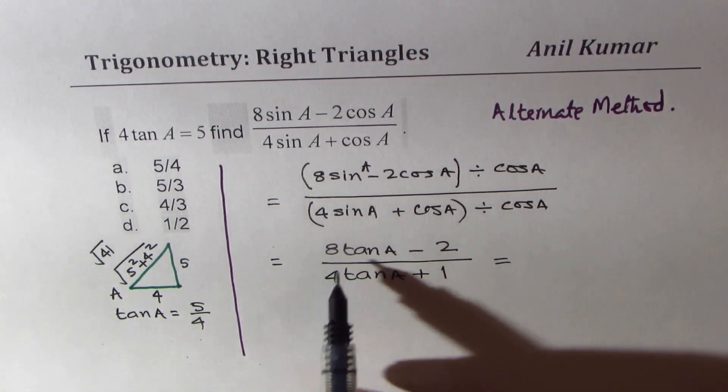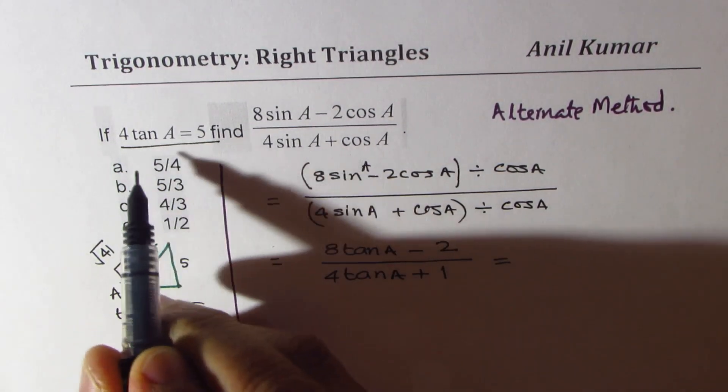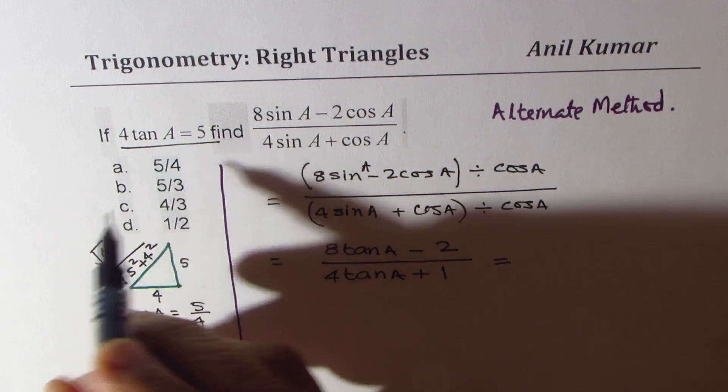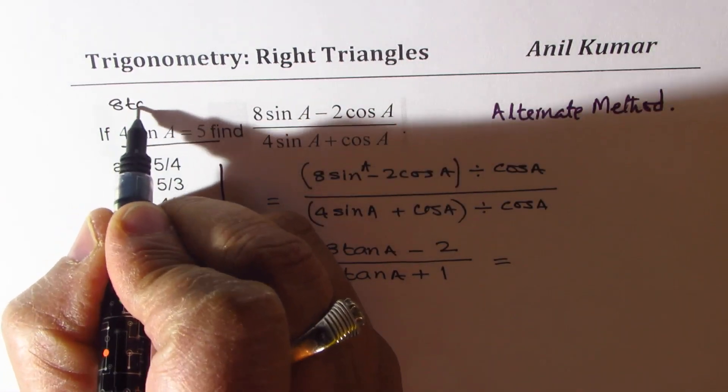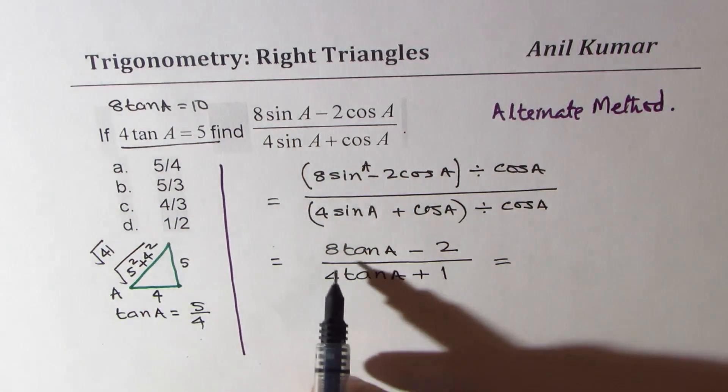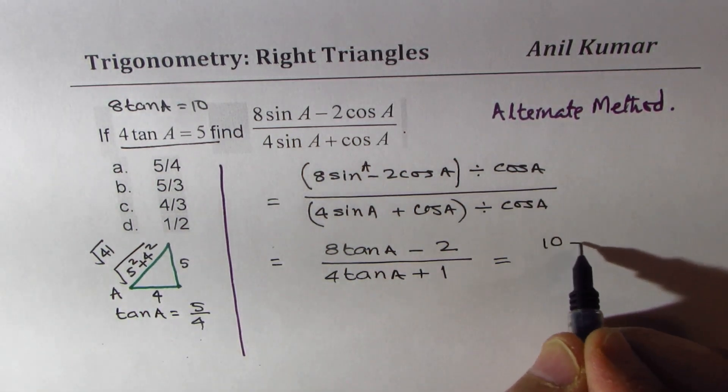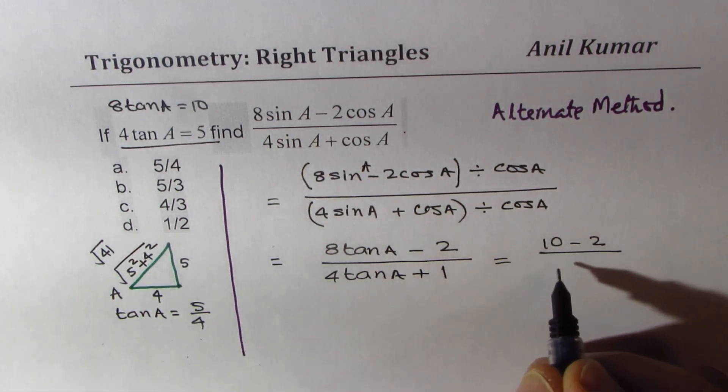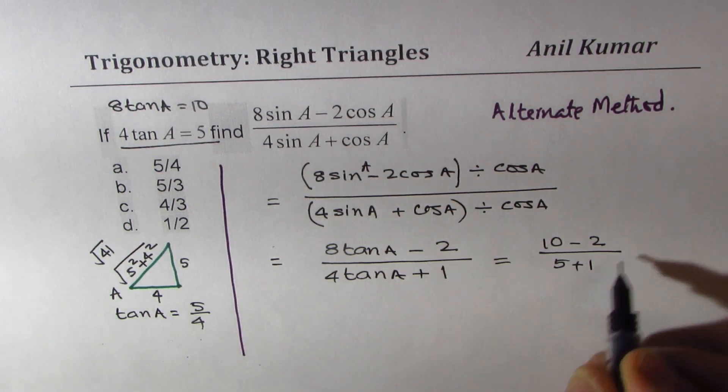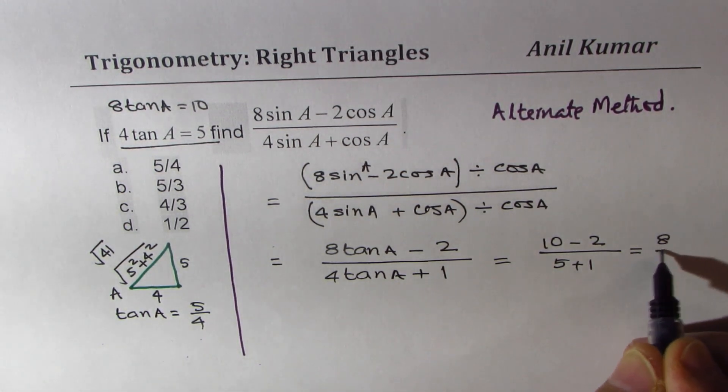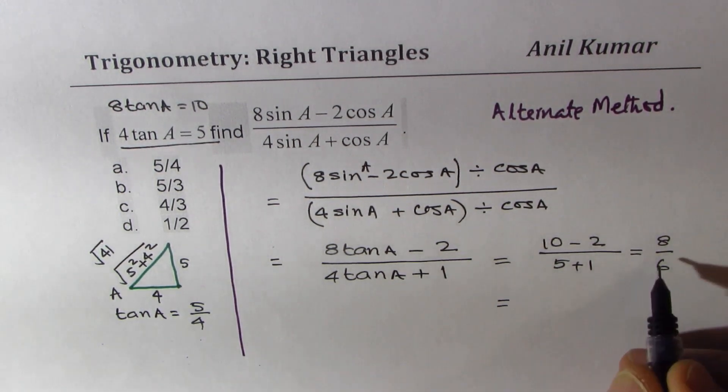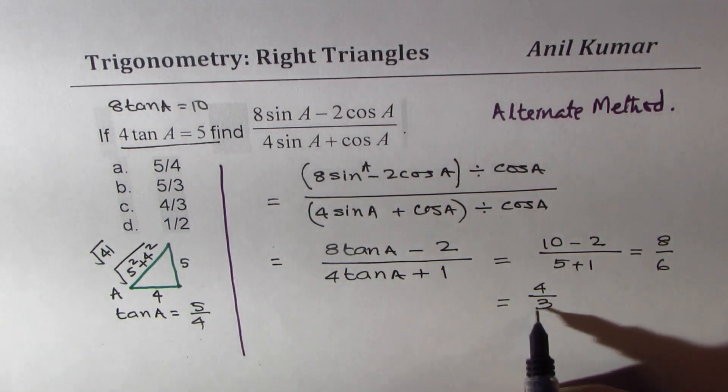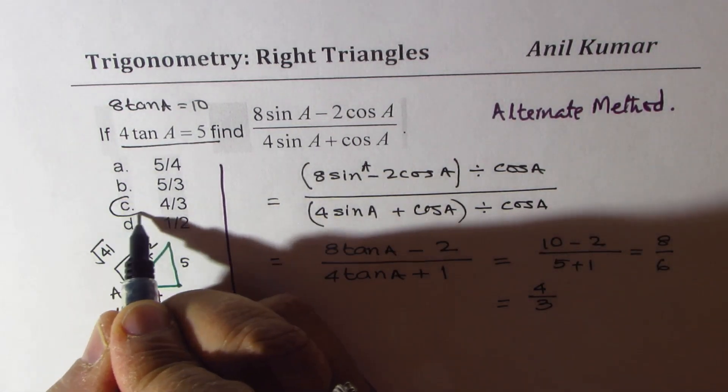Now, we know what 4 tan A is. 4 tan A is 5, so 8 tan A equals 10. So 8 tan A is 10, so we get (10 - 2) over (5 + 1). So that gives us 8 over 6, or dividing by 2, we get 4 over 3, which is option C.